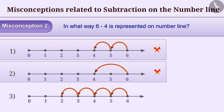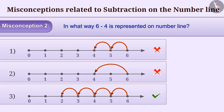This is also an incorrect understanding. The right way to find the value of 6 minus 4 is to start from 6, then move towards the left by taking 4 steps of unit distance each. After taking 4 steps, we reach number 2, which is the answer of 6 minus 4.